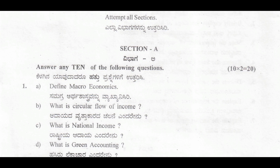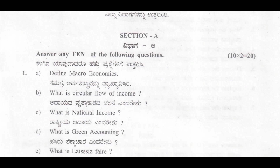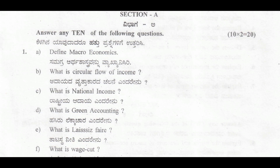The instruction to candidates is to attempt all sections. There are three sections: A, B, and C, and every section carries an equal amount of marks. In Section A, there are 12 questions in total and you need to answer any 10 questions. Every question carries 2 marks, so 10 into 2 gives 20 marks from Section A.